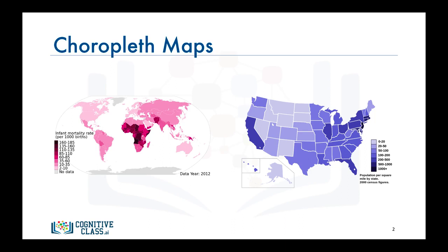The map to the left is a choropleth map of the world showing infant mortality rate per 1,000 births. The darker the color, the higher the infant mortality rate. According to the map, African countries have very high infant mortality rates, with some of them reporting a rate higher than 160 per 1,000 births.